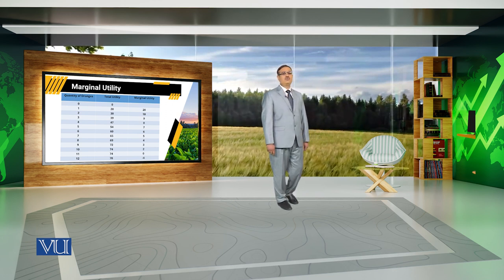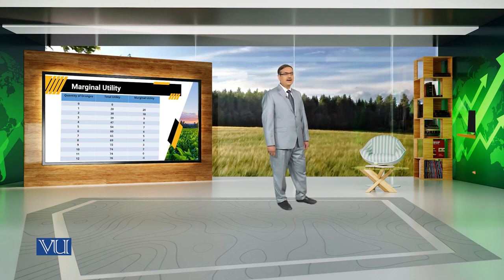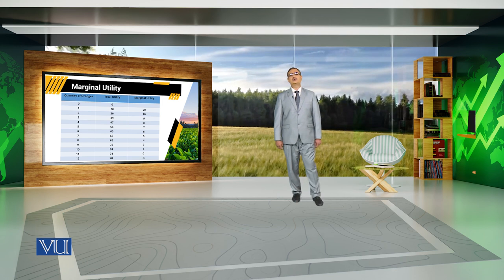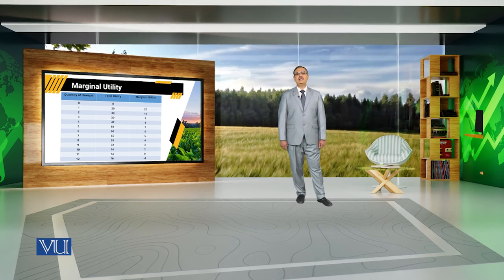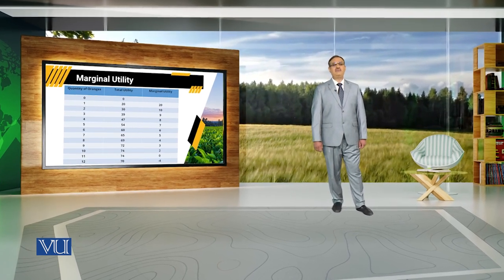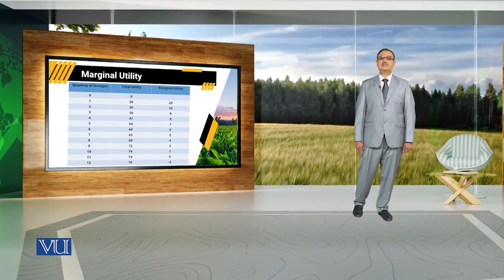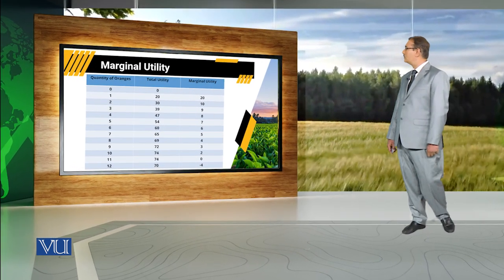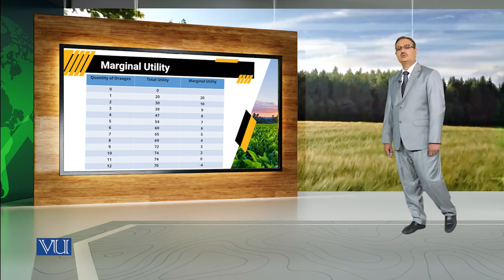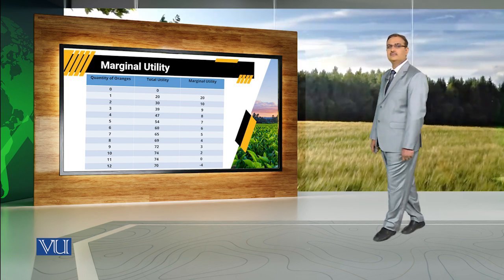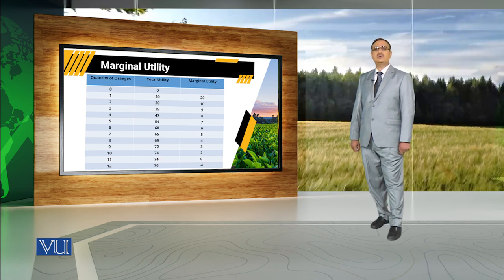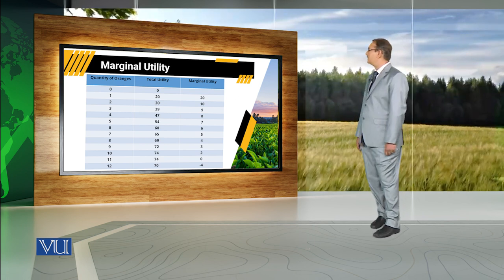Marginal utility is computed by subtracting the previous unit's total utility from the current total utility — the change in utility between two quantities of oranges. For example, if the consumer moves from 0 units of orange to 1 unit of orange, his utility moves from 0 to 20. So the change in utility when consumption increases from 0 to 1 unit is equal to 20.